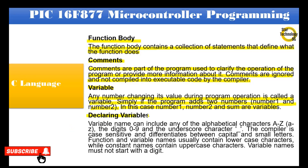When declaring variables, a variable name can include any of the alphabetical characters A to Z, the digits 0 to 9, and the underscore character. The compiler is case sensitive and differentiates between capital and small letters. Function and variable names usually contain lowercase characters, while constant names contain uppercase characters. Variable names must not start with a digit.